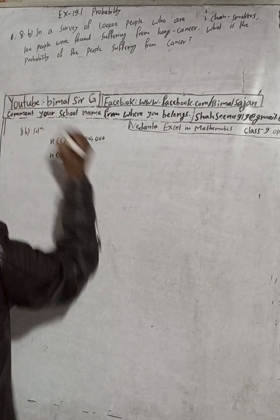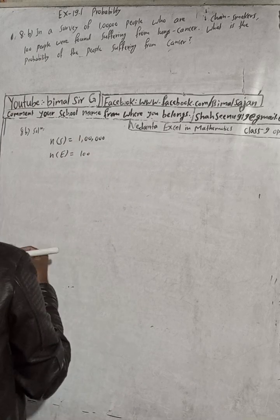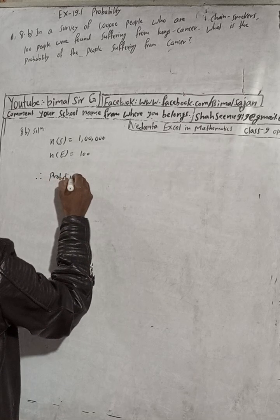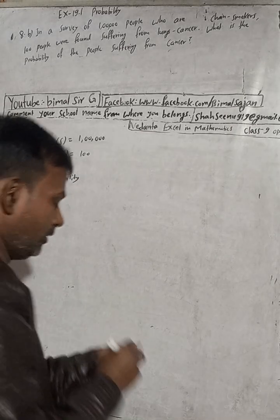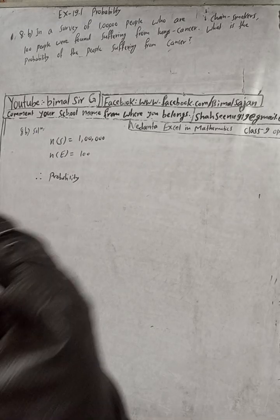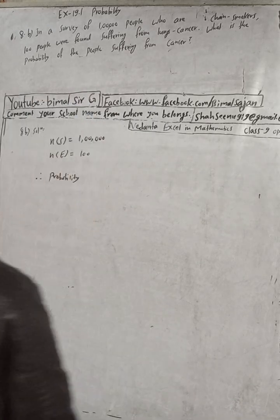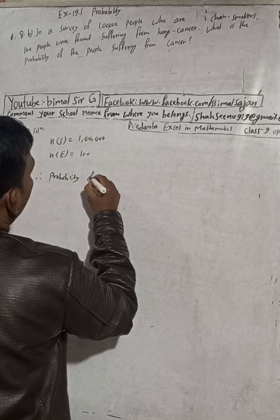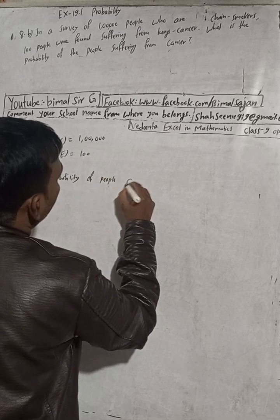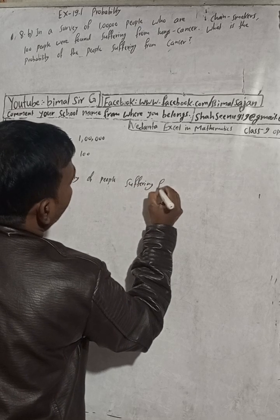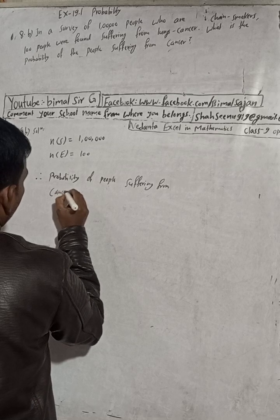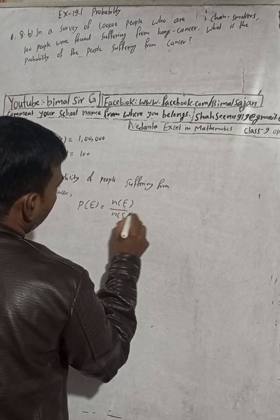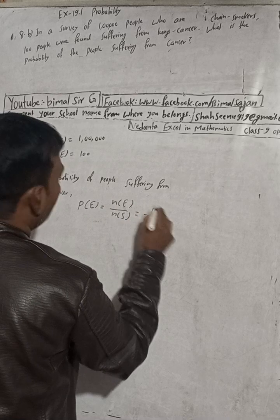What is the probability of the people suffering from cancer? That means P(E) is equal to n(E) by n(S). Here n(E) is 100 and there is 1 lakh.